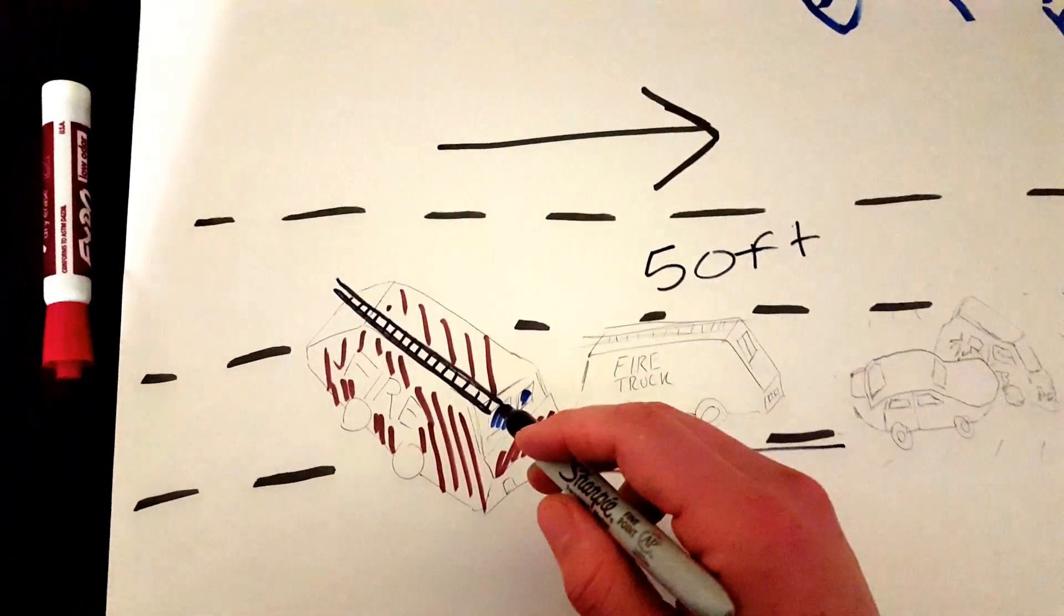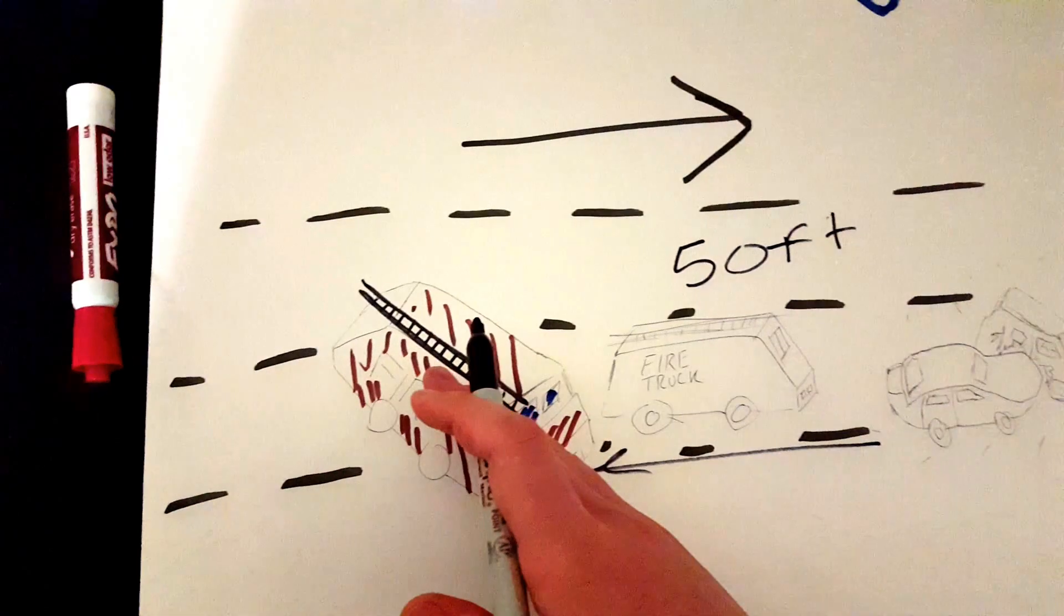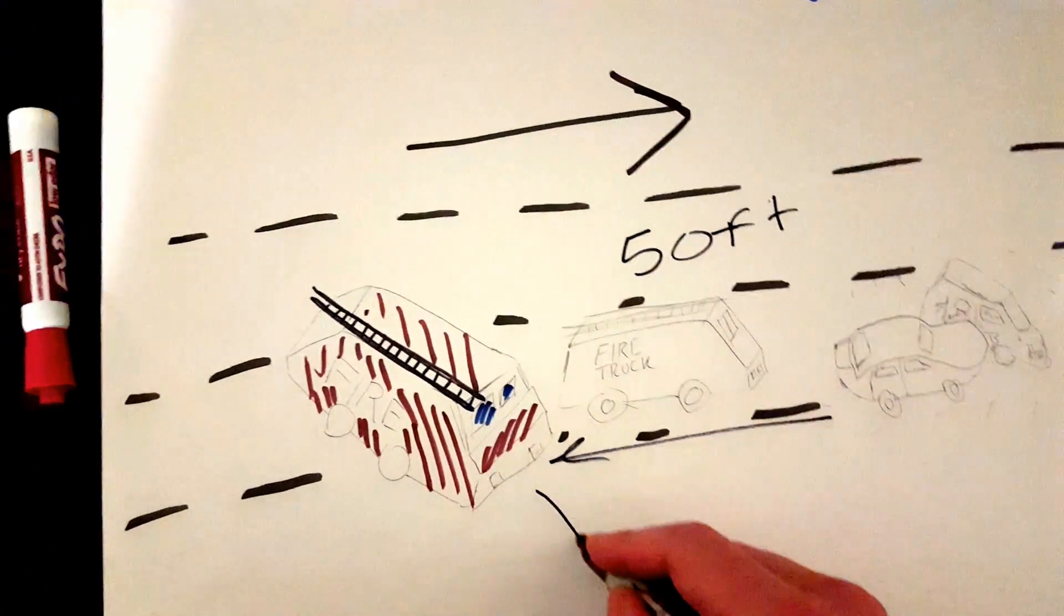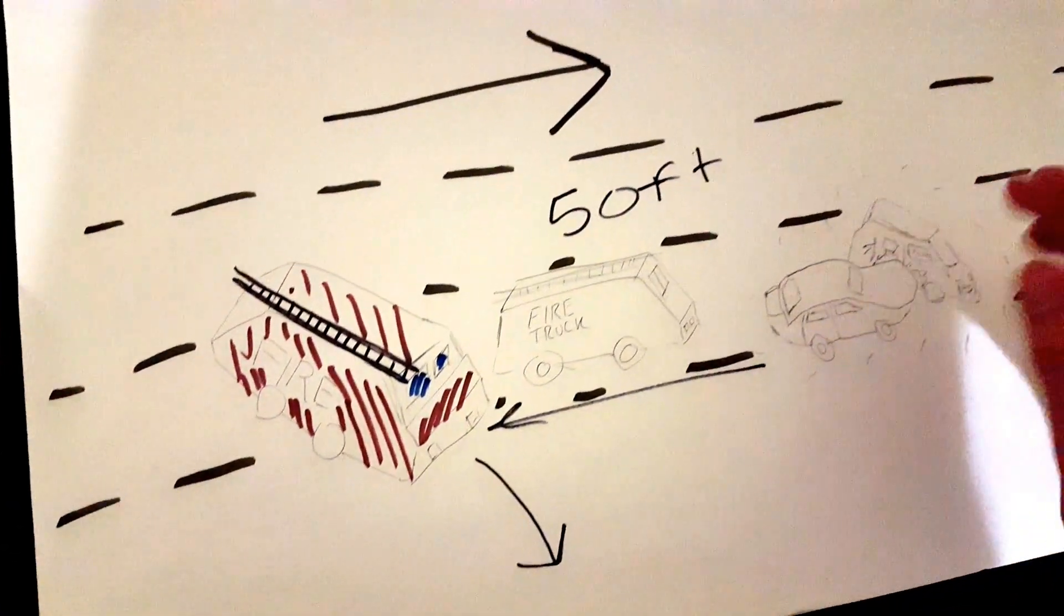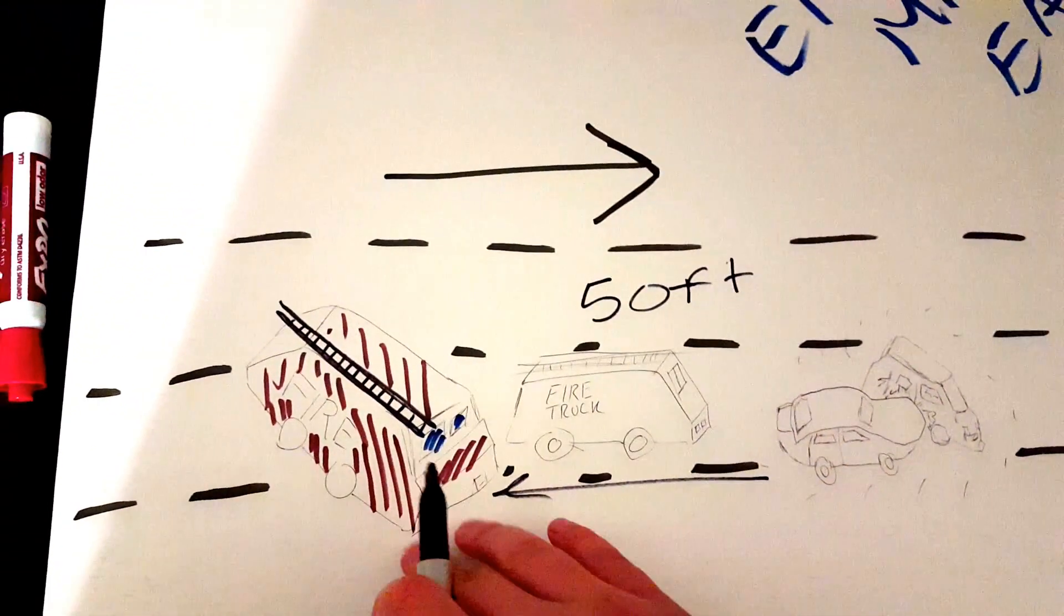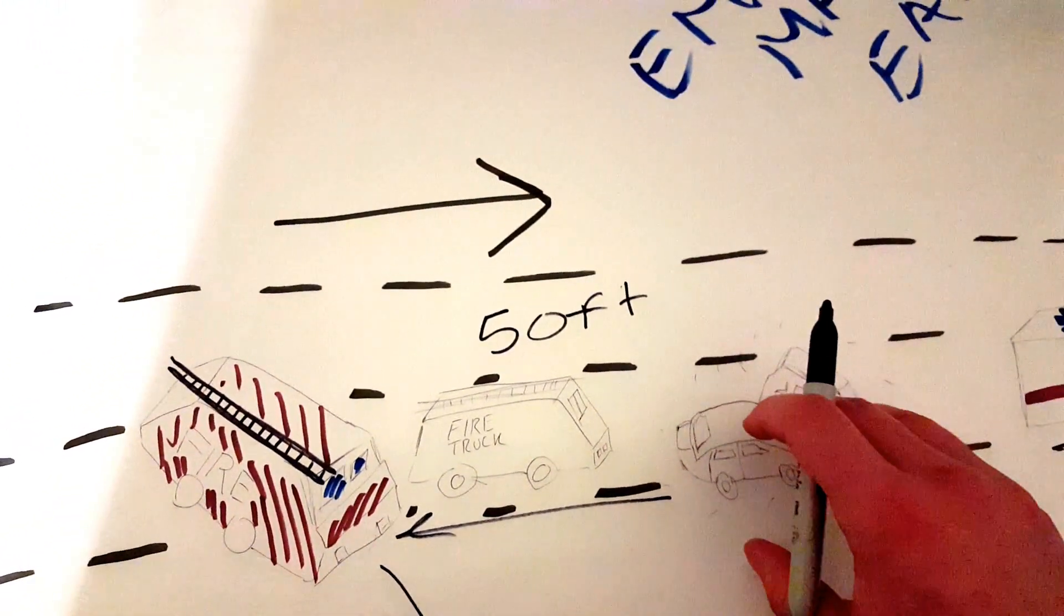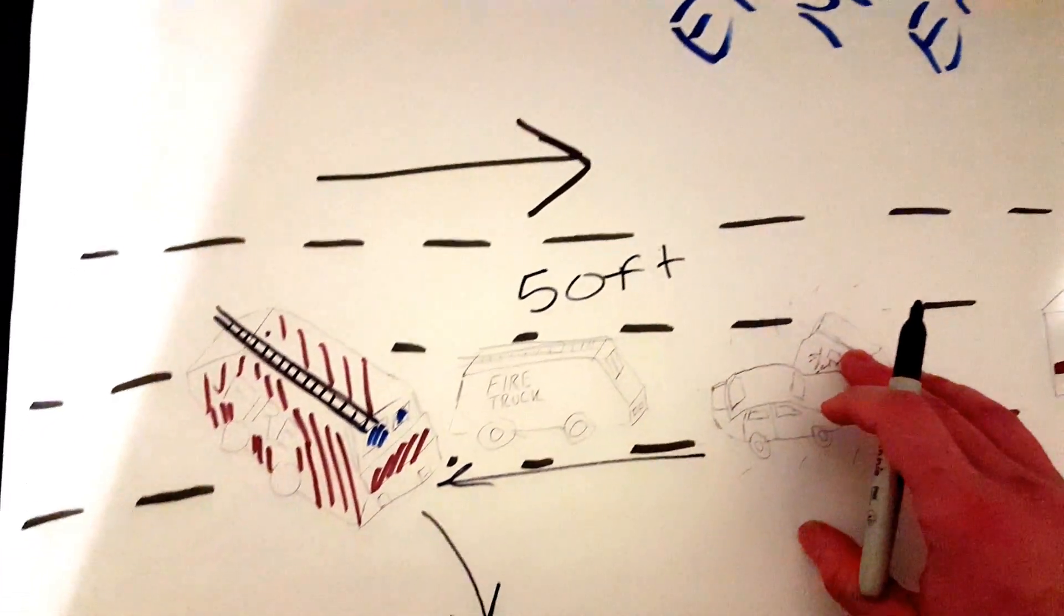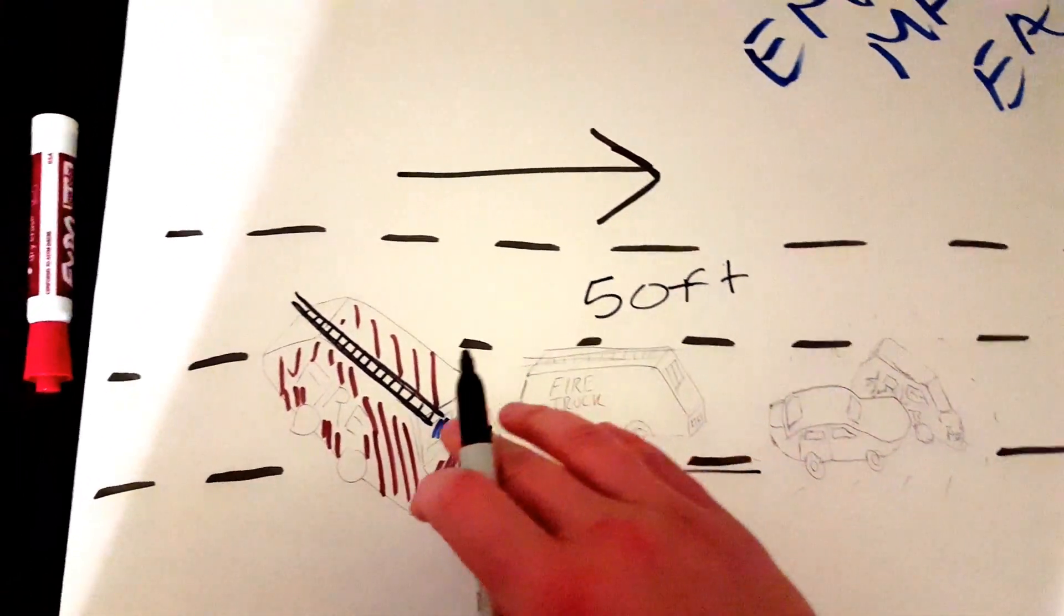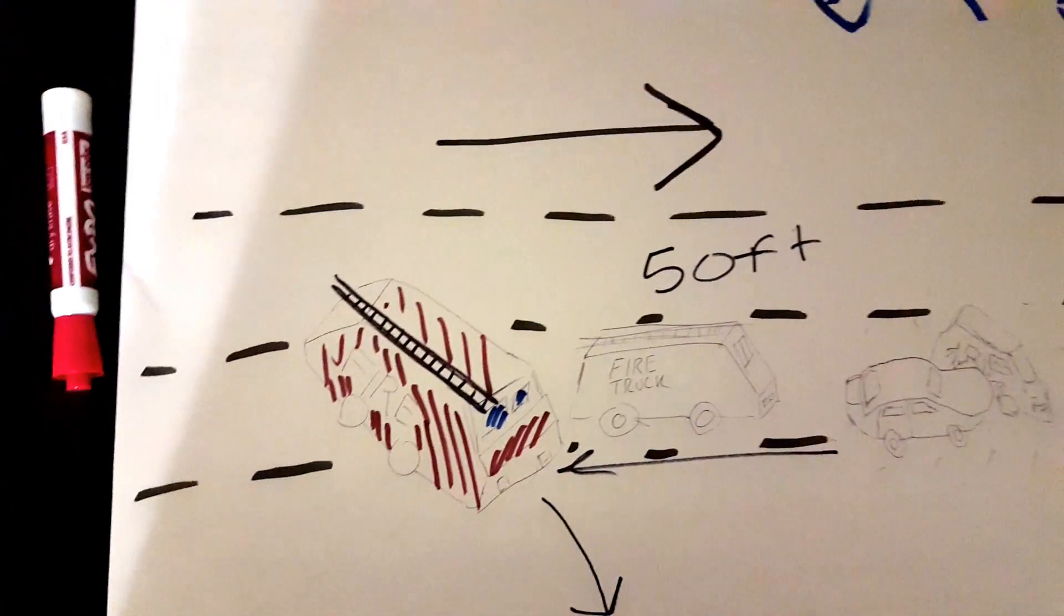You want to park your vehicle at an angle with the wheels turned away from the accident. The reason for this is that if you're the first on scene, you don't want anybody else to hit this. You don't want to make it worse.